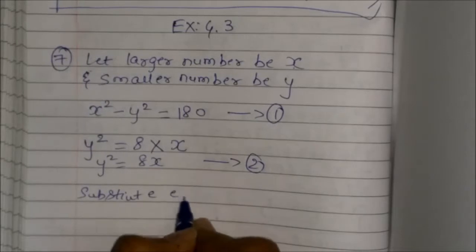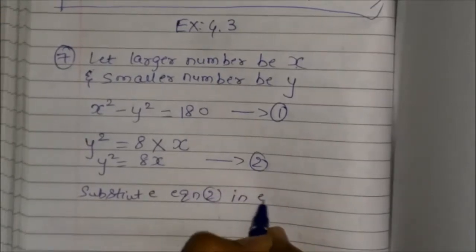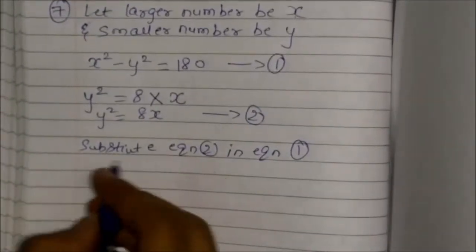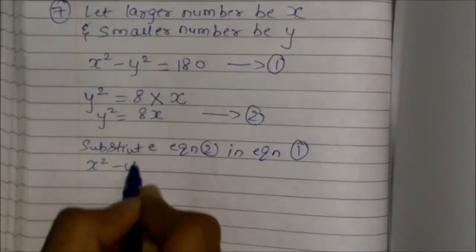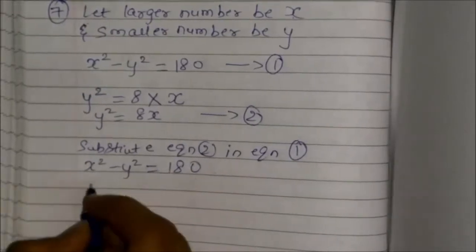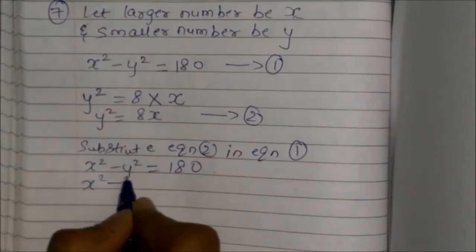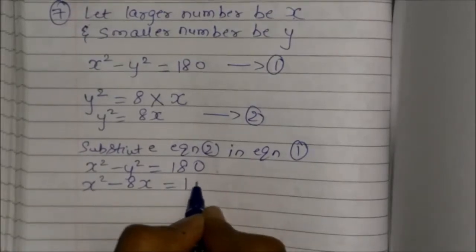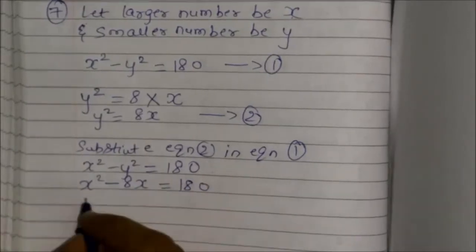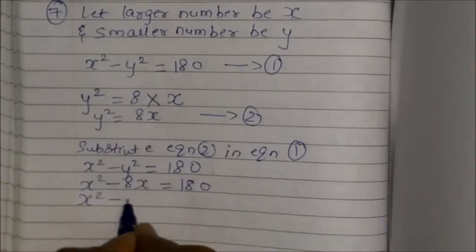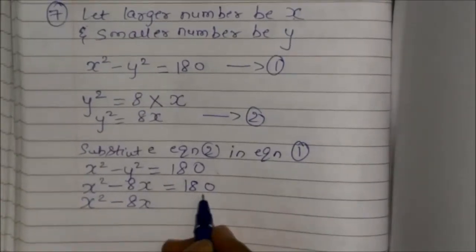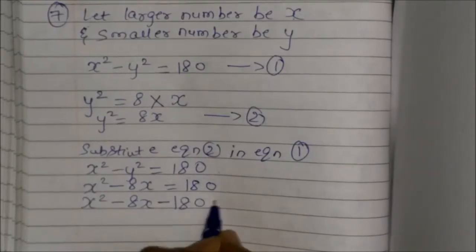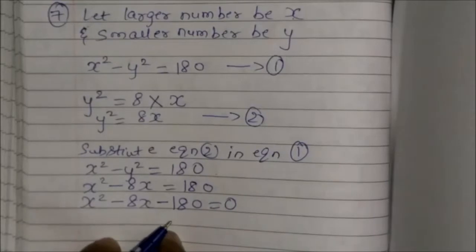Substitute equation 2 into equation 1. So x² minus y² equals 180 becomes x² minus 8x equals 180. Bringing 180 to the left side gives x² minus 8x minus 180 equals 0.